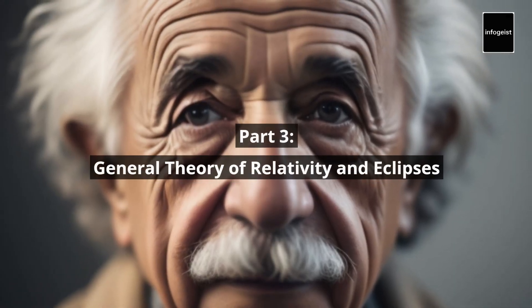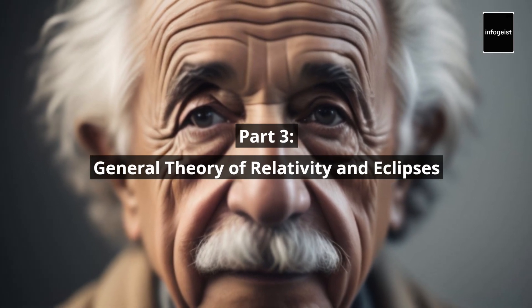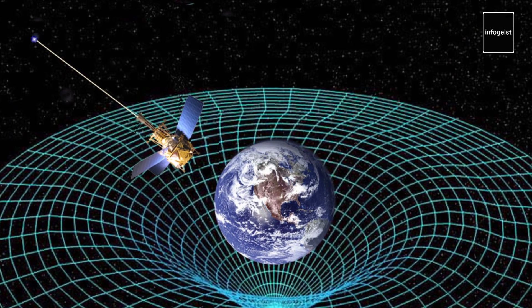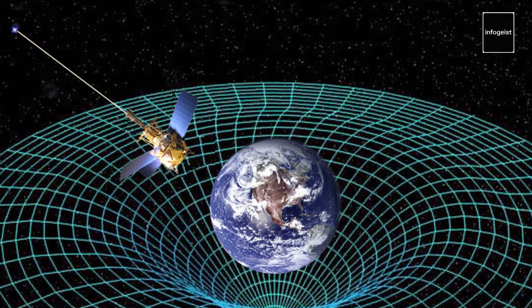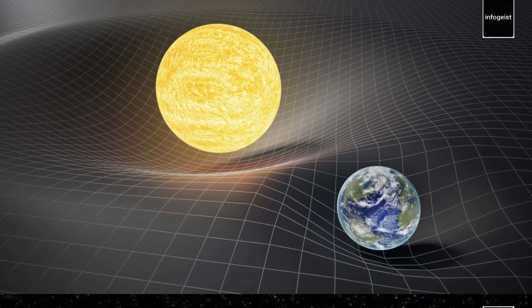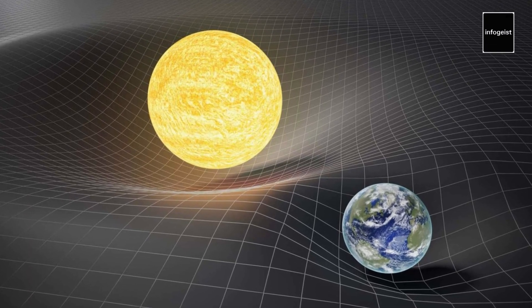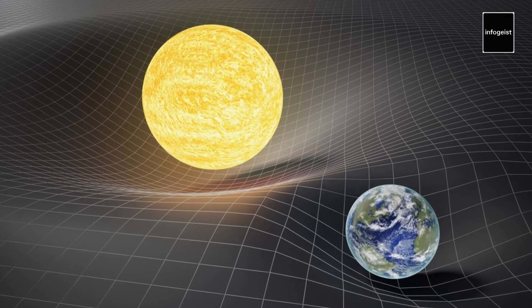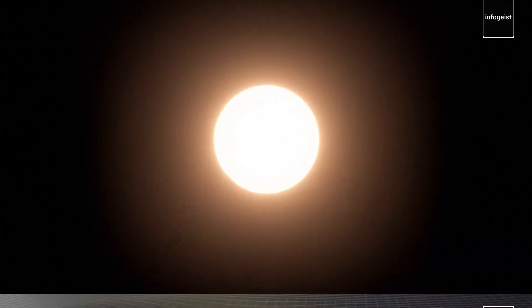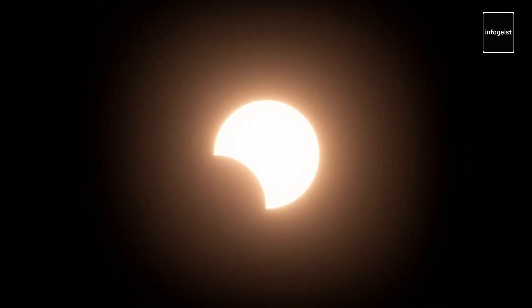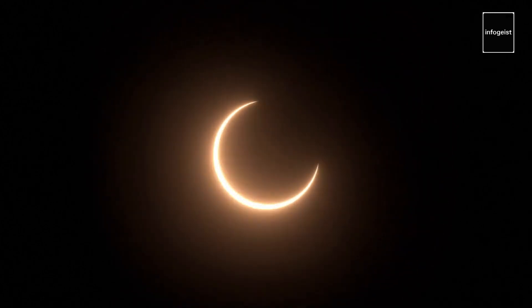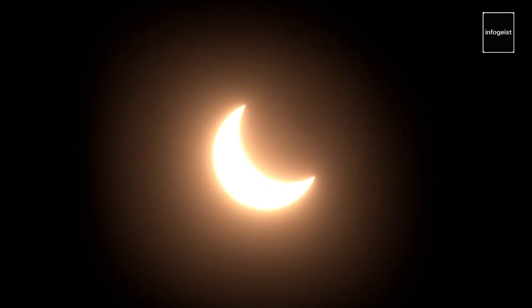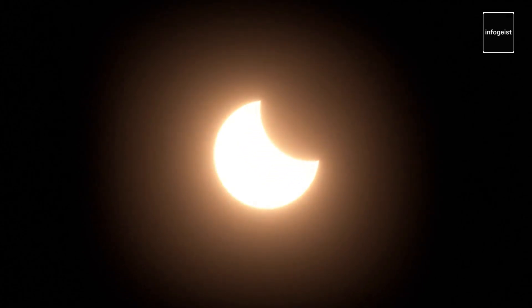Part 3: General Theory of Relativity and Eclipses. Einstein's next great achievement came in 1915 with the formulation of the General Theory of Relativity. This theory expanded on the special theory, encompassing gravity and how massive objects curve spacetime. In 1919, during a solar eclipse, astronomers observed stars shifting positions as their light passed near the sun, confirming Einstein's prediction of the bending of light in the presence of a massive object. This historic observation catapulted Einstein to international fame.